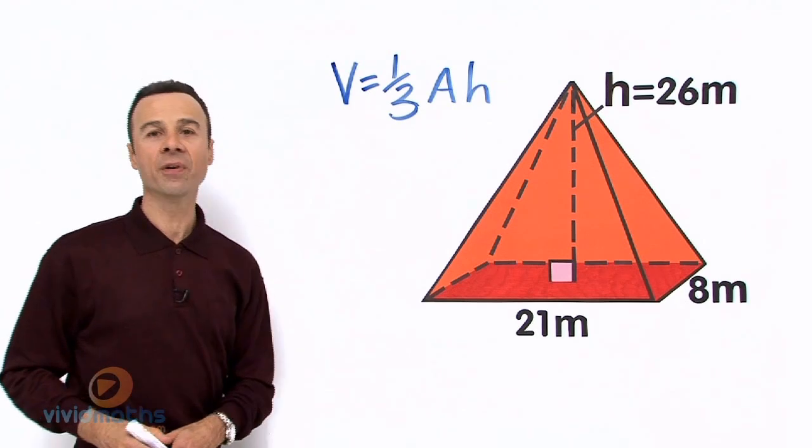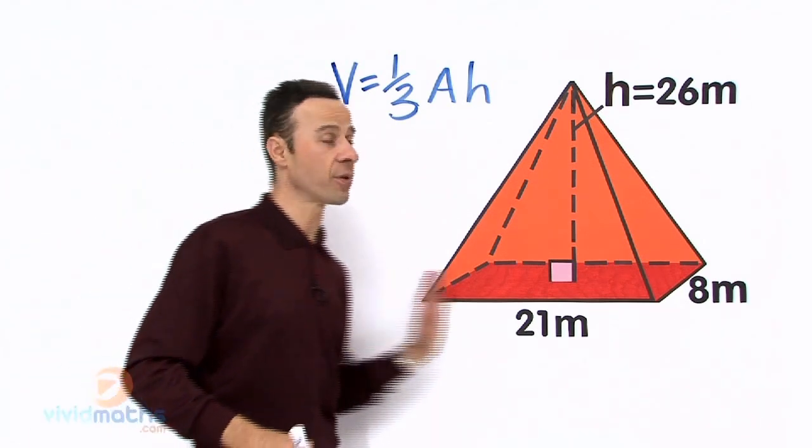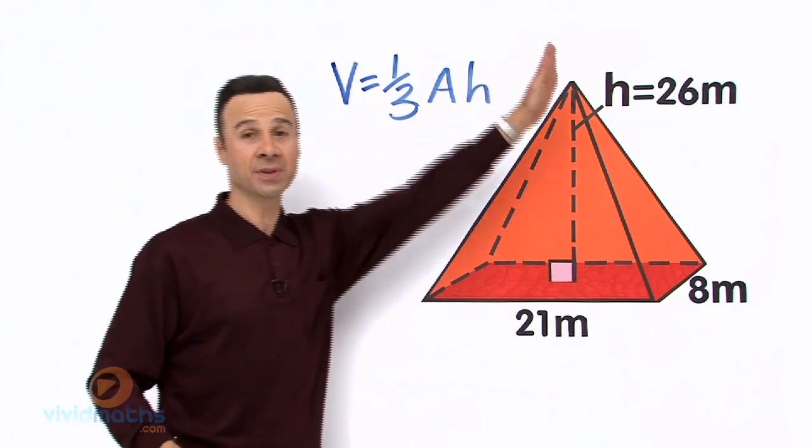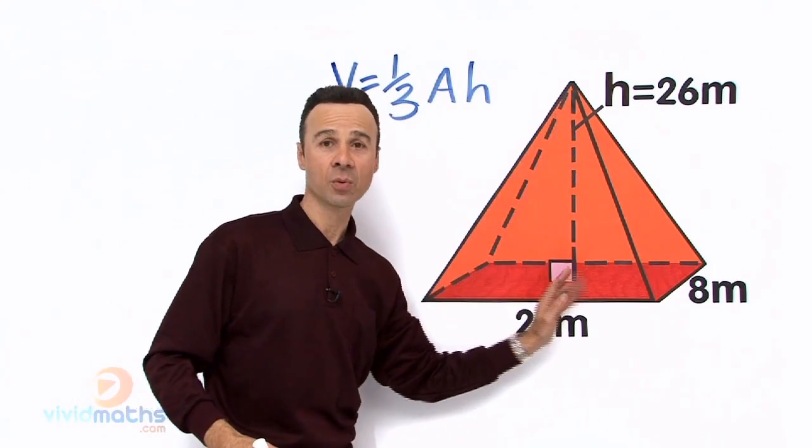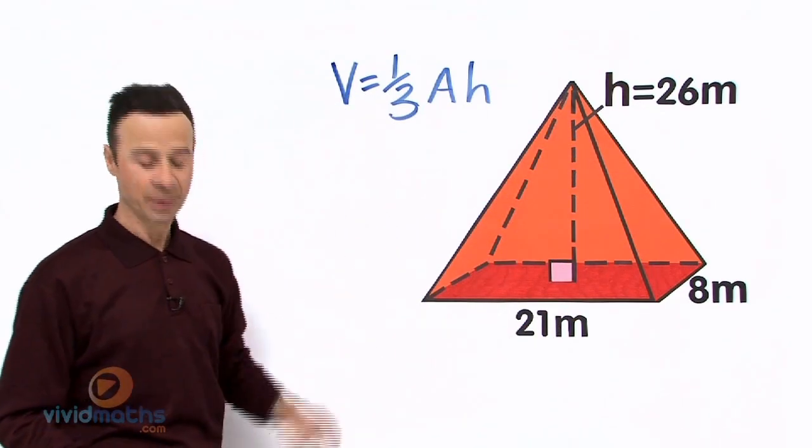So volume of a pyramid is 1/3 times the area of the base times the perpendicular or vertical height, which is 90 degrees down here. Okay, so that's our formula.